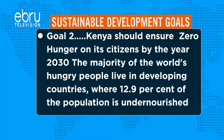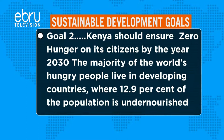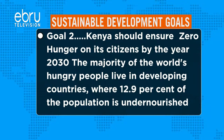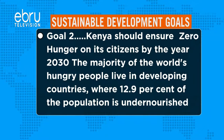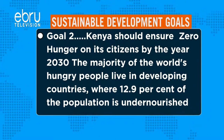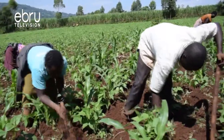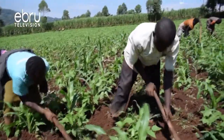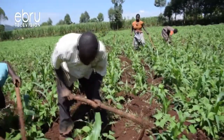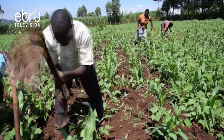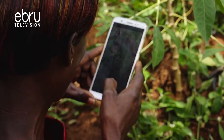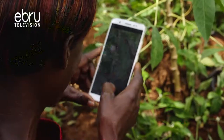According to the Sustainable Development Goals, under Goal No. 2, Kenya should ensure zero hunger for its citizens by the year 2030. The majority of the world's hungry people live in developing countries, where 12.9% of the population is undernourished.